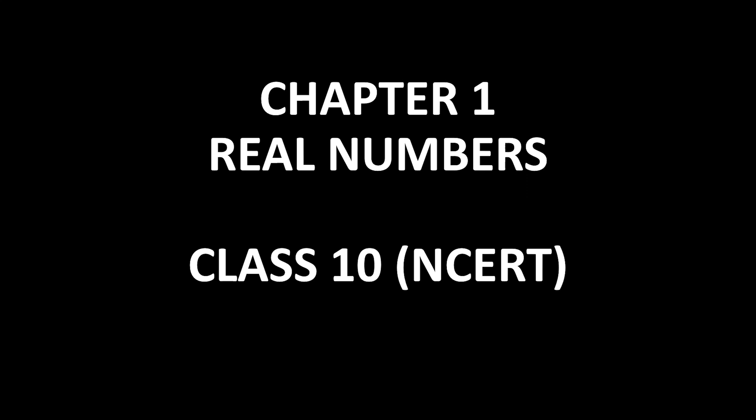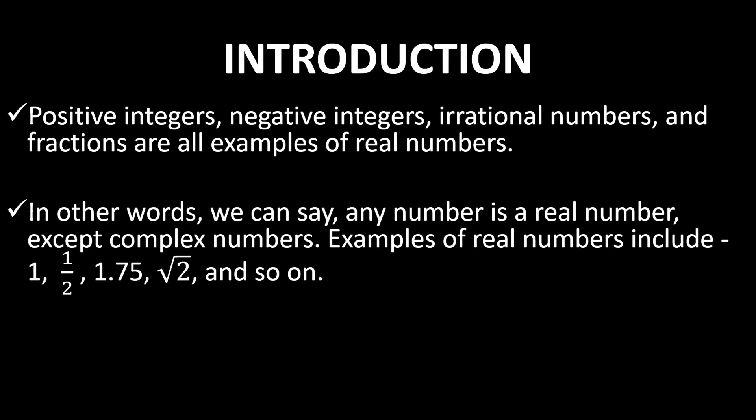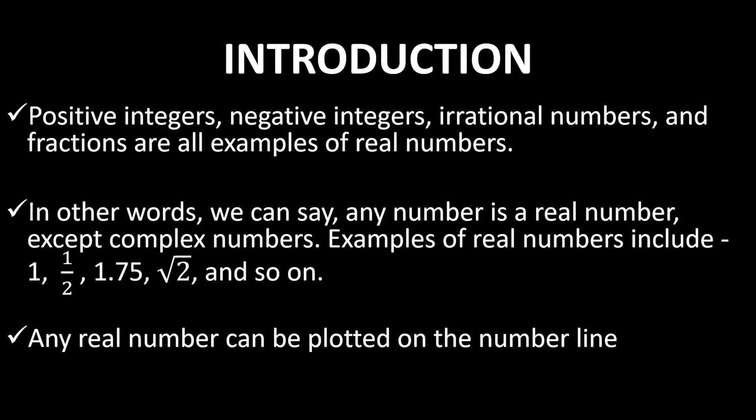Hello everyone, welcome to Study Desk. Today we are going to talk about Chapter 1: Real Numbers, Class 10 from NCRT. Positive integers, negative integers, irrational numbers, and fractions are all examples of real numbers. In other words, any number is a real number except complex numbers. Complex numbers are where you write the square root of a negative number — for example, square root of minus 15. Some examples of real numbers include 1, 1/2, 1.75, root 2, and so on. Any real number can be plotted on the number line.